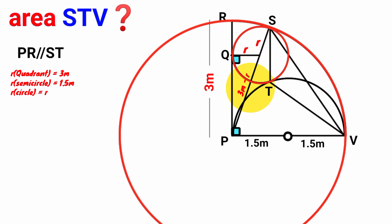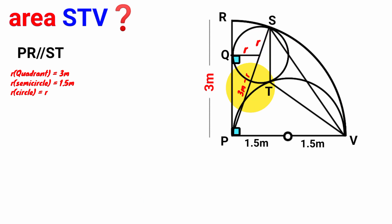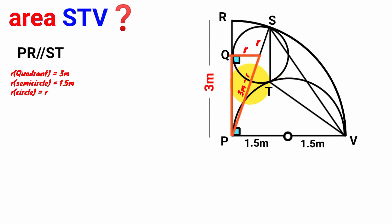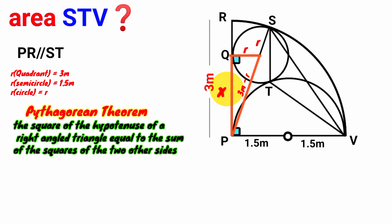We look at this triangle. Because of this right angle it is a right-angle triangle. We have the length of one side to be three minus r, the length of the other to be r, and if we call the third side x, we can apply the Pythagorean theorem, which states that the square of the hypotenuse of a right-angle triangle equals the sum of the squares of the two other sides.